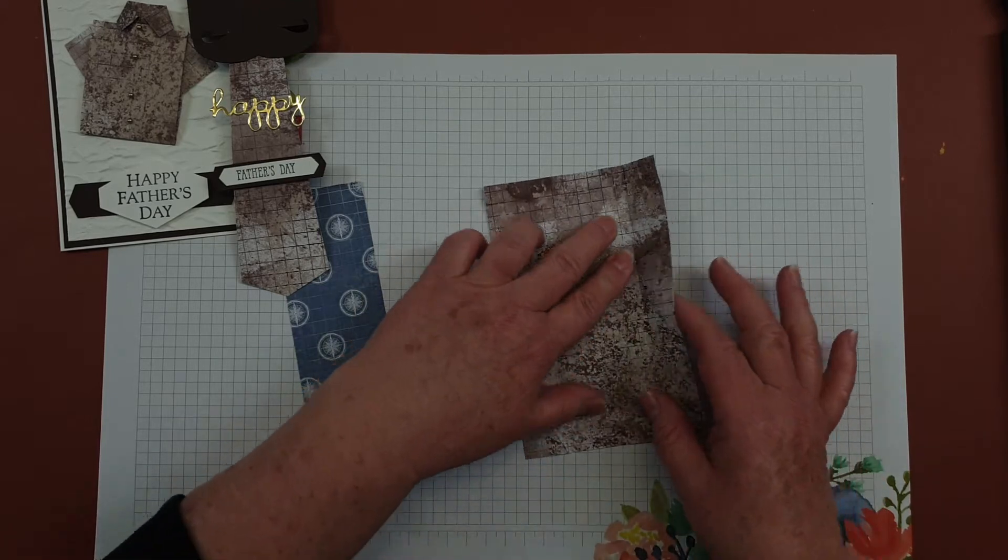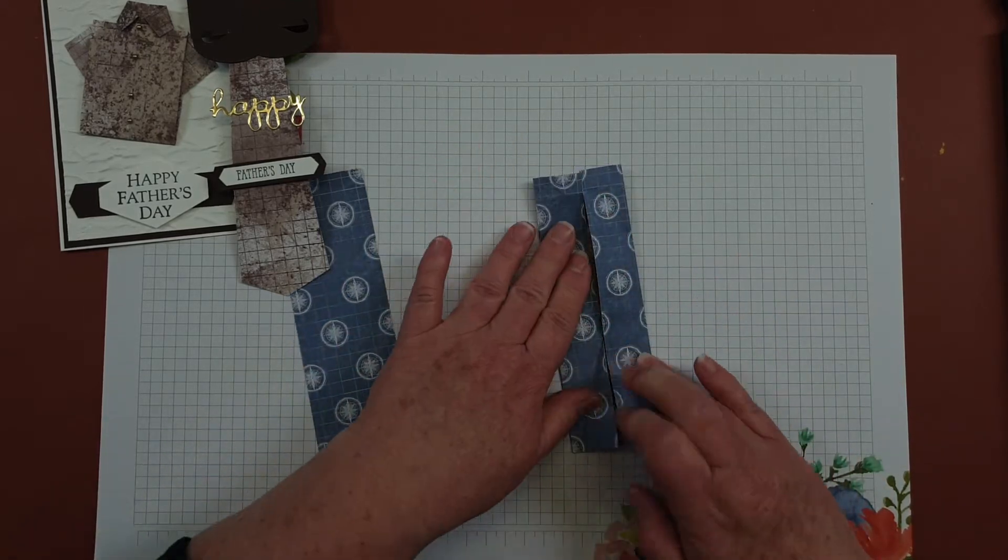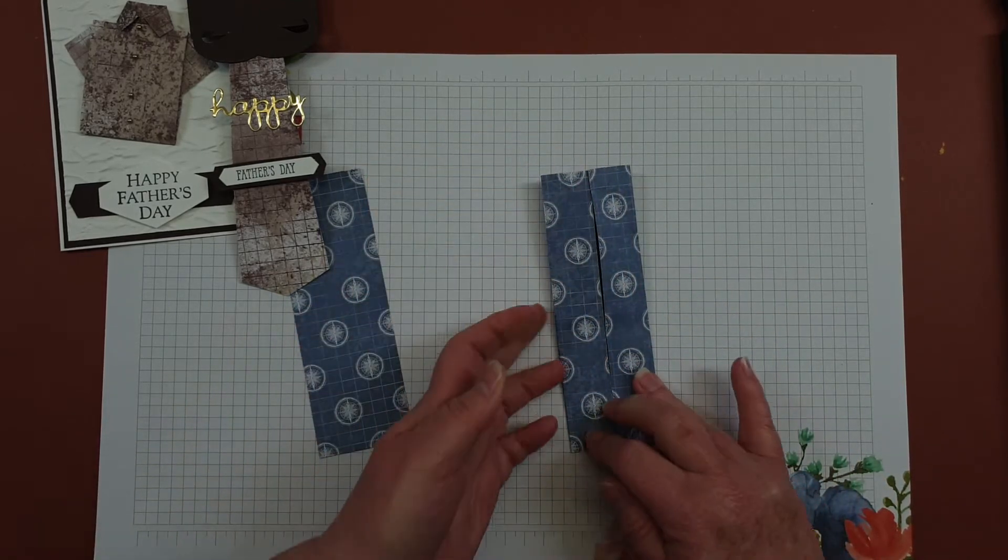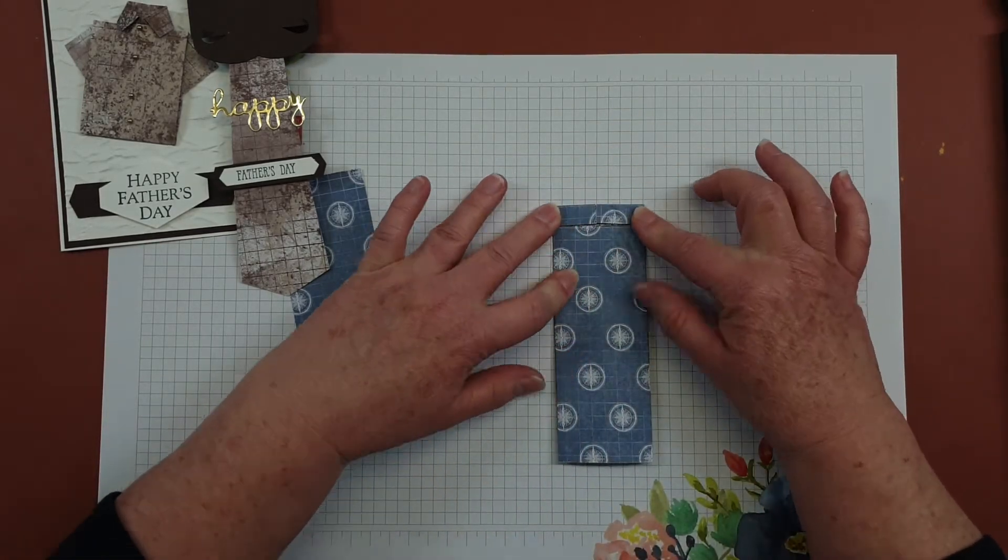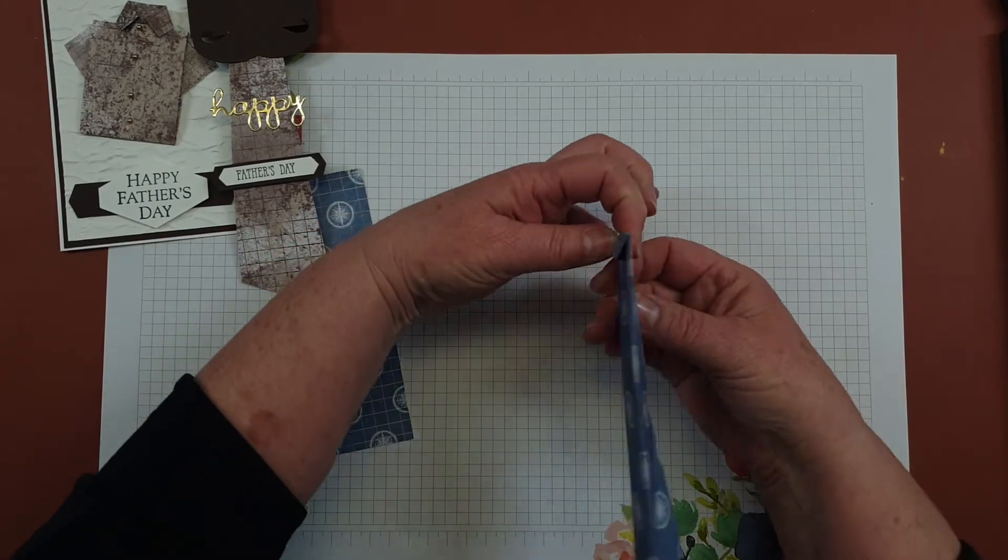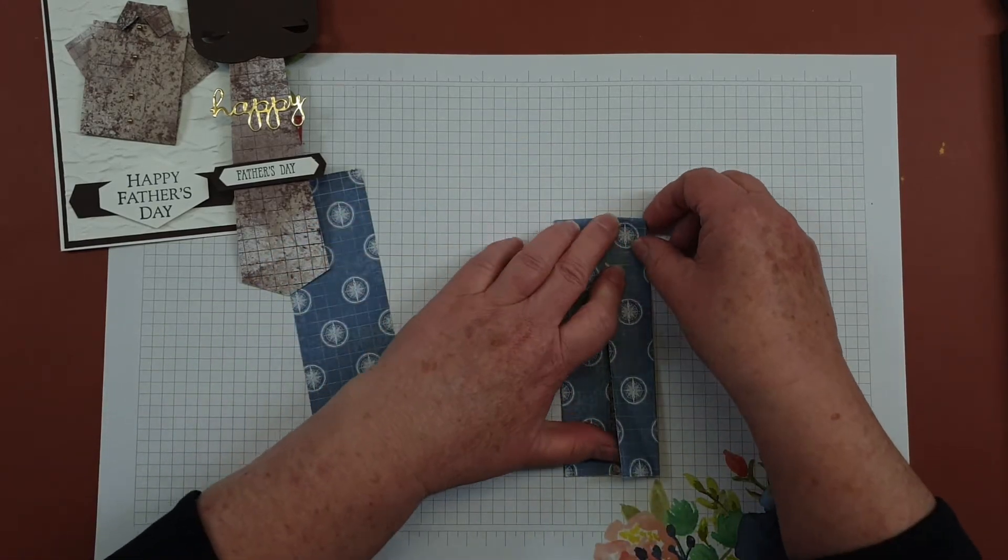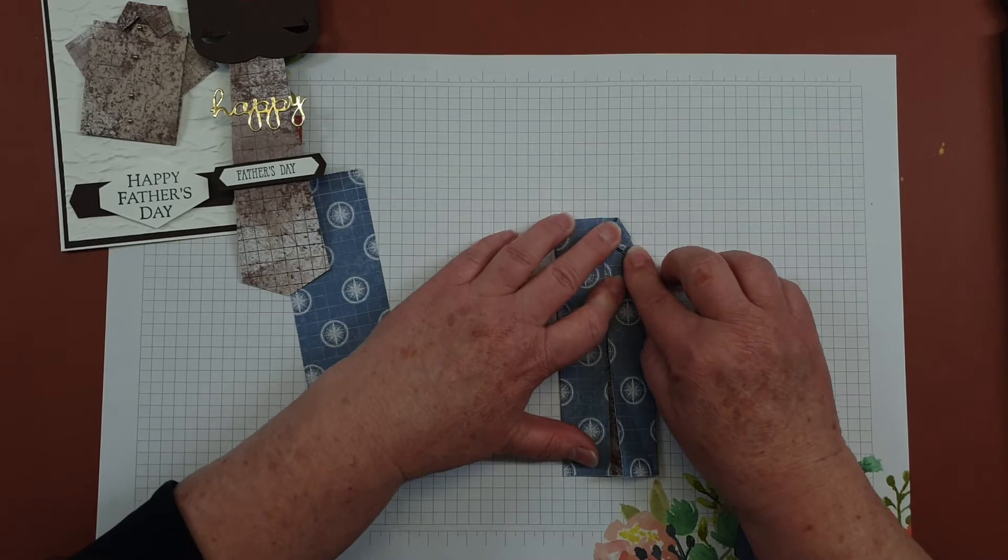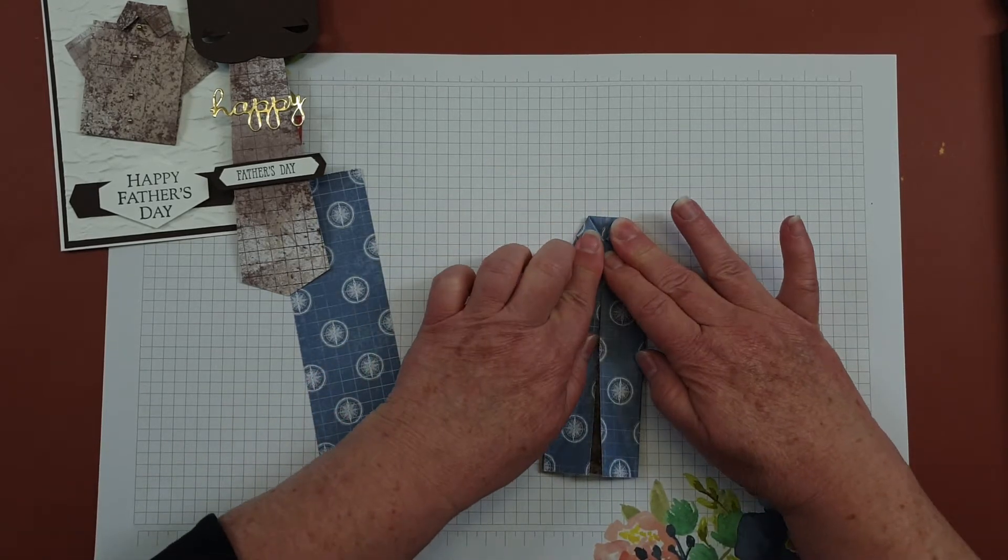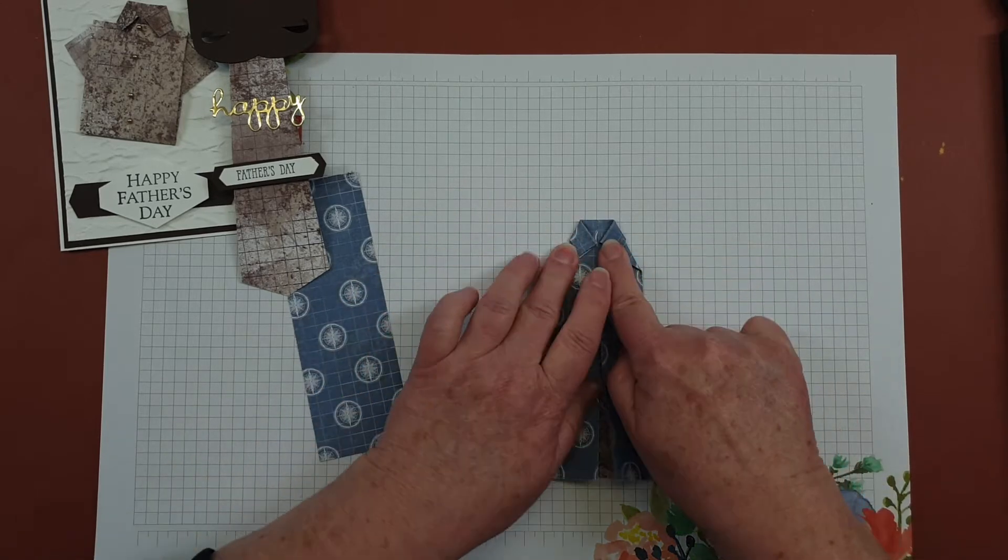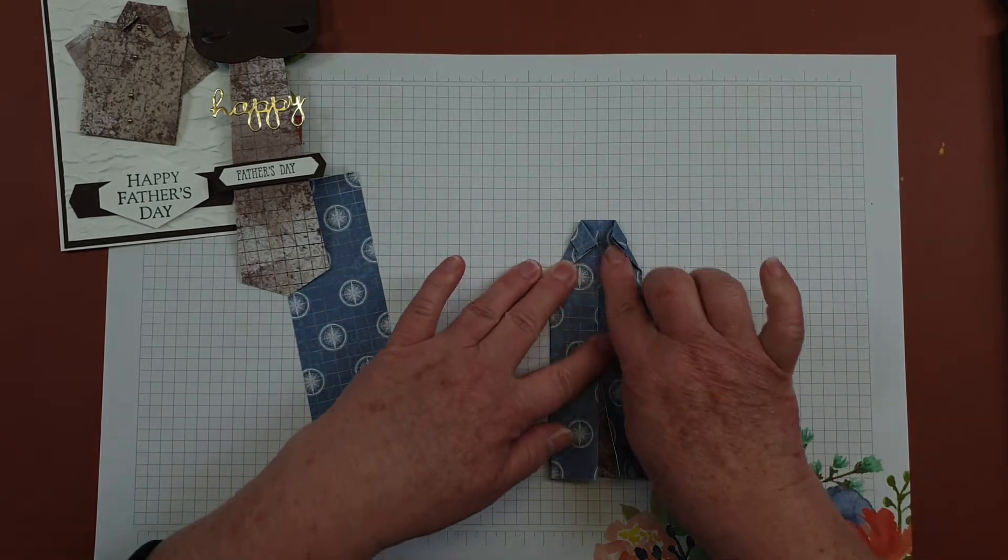Open it back out and then fold it in half again. You're going to flip it over and just fold down about a centimeter from the top, and then flip it back over again. We're going to form the collar now, so take those two outside corners and bring them over so that they meet in the middle, and you can see we've just got the top of the collar.